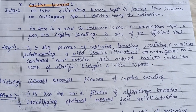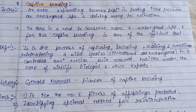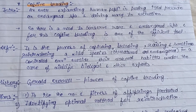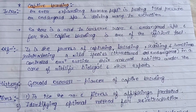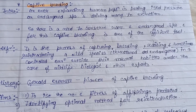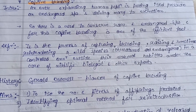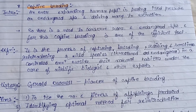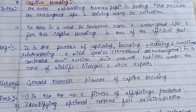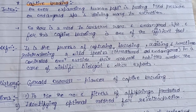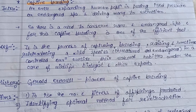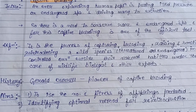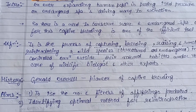The definition of captive breeding: it is the process of capturing, breeding, raising, and sometimes reintroducing wild species — that is, threatened and endangered ones — in a controlled environment outside their natural habitats, under the care of wildlife biologists and other experts. It is an ex-situ conservation method.